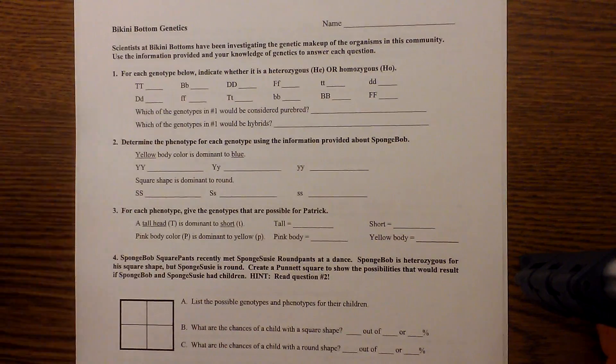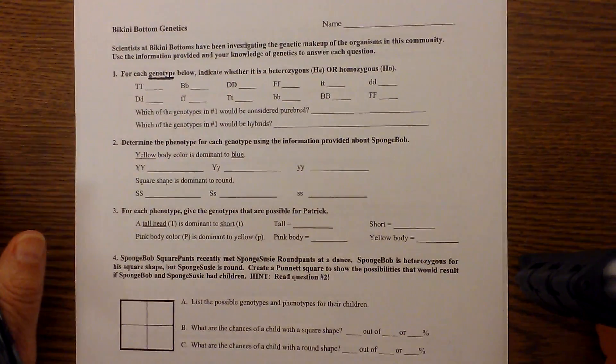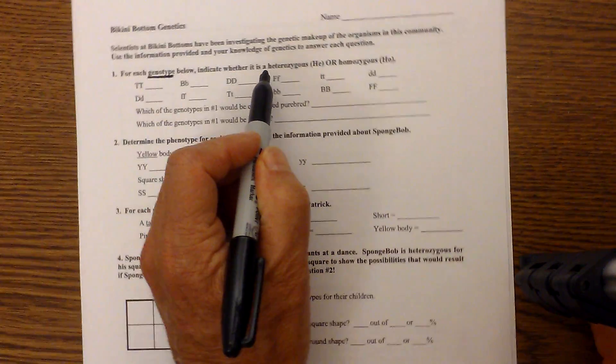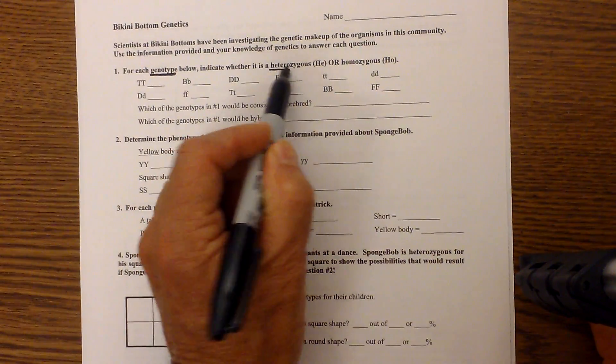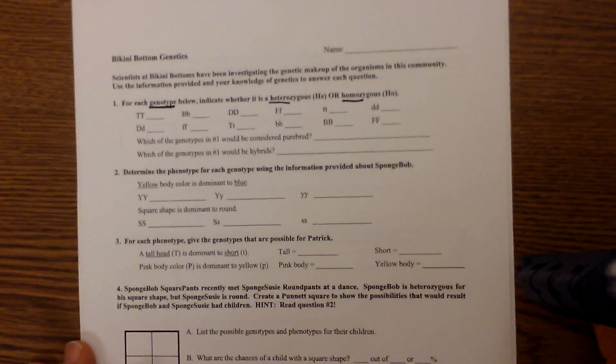Whenever you work Punnett Squares there are a couple key terms you need to know. One is genotype which is the genetic code, phenotype which is the physical expression, and then the difference between heterozygous and homozygous and then of course dominant and recessive.